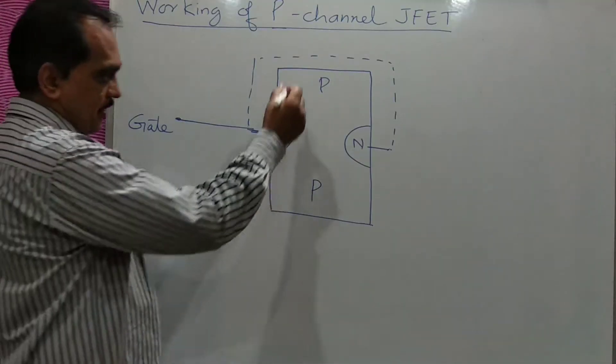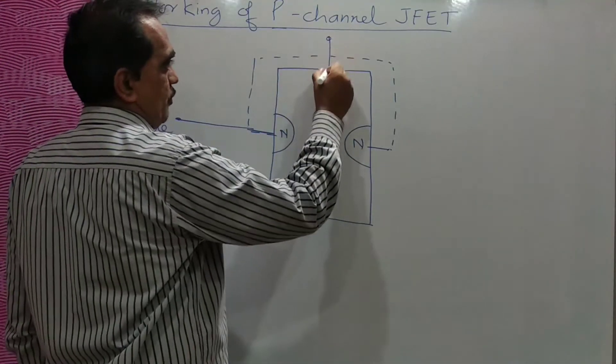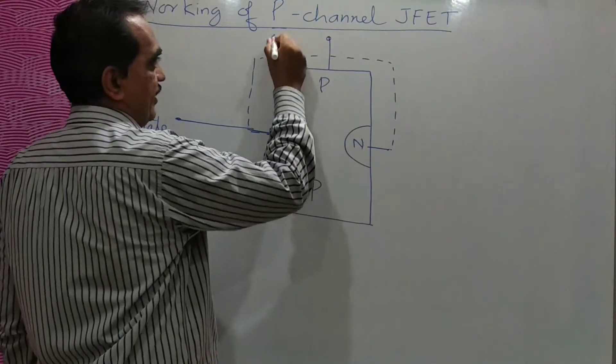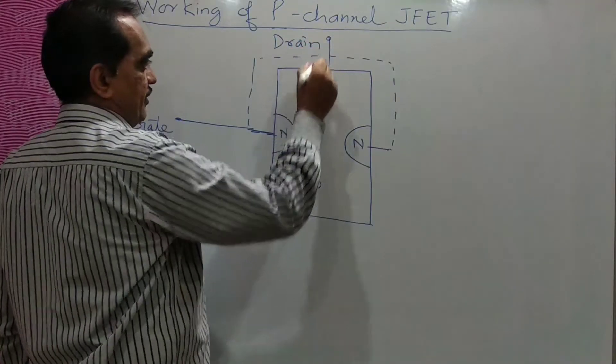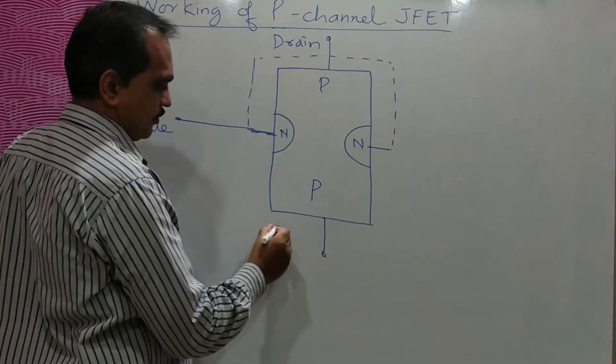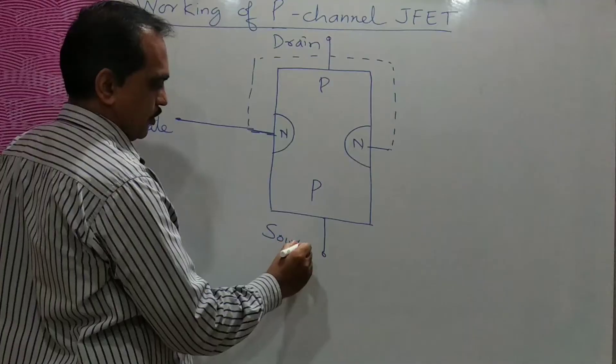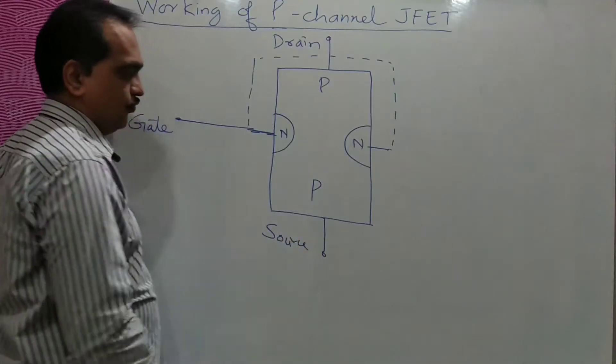In the p-type semiconductor bar, on the top you will have the terminal drain, and below you will have the terminal source.